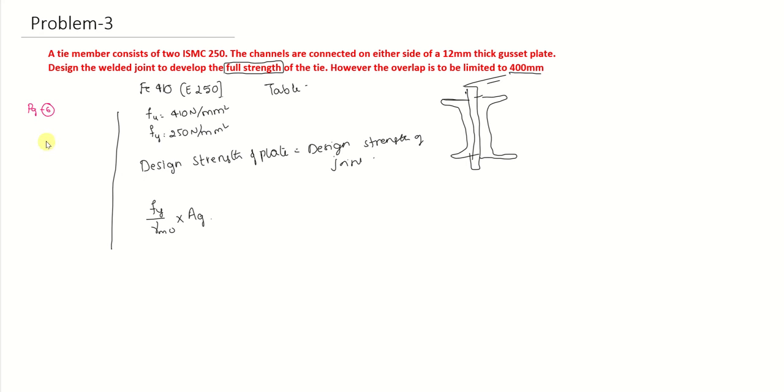We have to write the properties of ISMC 250. Page number 6 gives you the properties of ISMC 250. From that we can get thickness of web as 7.1mm, thickness of the flange is 14.1mm, and sectional area AG is given as 38.67 cm² or 3867 mm². Based on the table, FY is 250 and gamma M0 is the partial safety factor for yield strength, given as 1.1 from page number 30 of IS 800 table number 5.